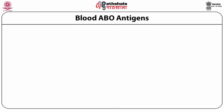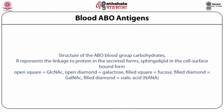Blood ABO antigens are an example of glycoproteins. The structure of ABO blood group carbohydrates has R representing the linkage to protein in the secreted form, and sphingolipid in the cell-surface-bound form. The symbols include: open square for GalNAc, open diamond for galactose, filled square for fucose, filled diamond for GalNAc, and filled diamond for sialic acid.